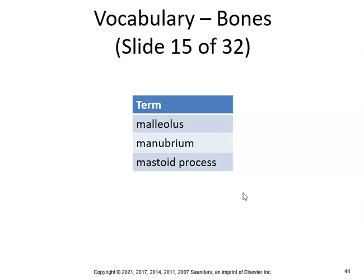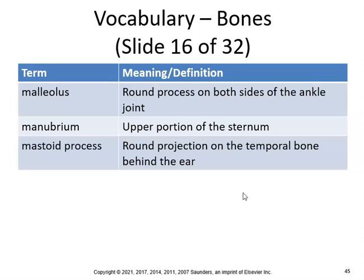The malleolus is the round process on both sides of the ankle — the medial malleolus and lateral malleolus. The manubrium is the upper portion of the sternum; during CPR you push on the manubrium, and going too far down can break off the xiphoid process. The mastoid process is a round projection of the temporal bone behind the ear.